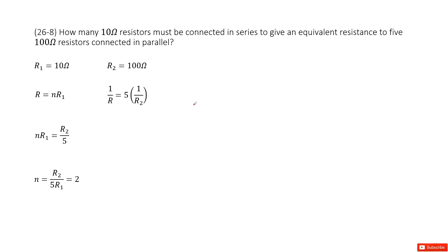So there, we ask you how many resistors. This resistance is, we call it R1, 10 ohms, must be connected in series to give an equivalent resistance to 5 resistors R2 equal to 100 ohms connected in parallel.